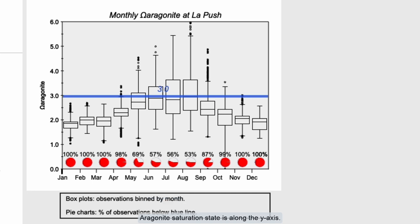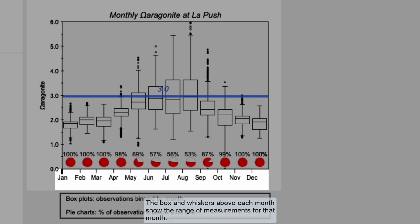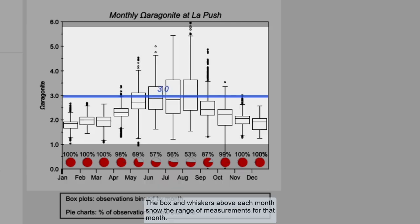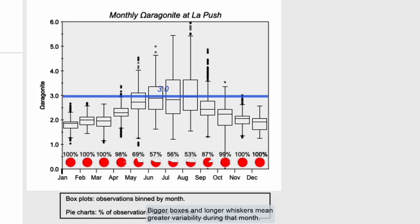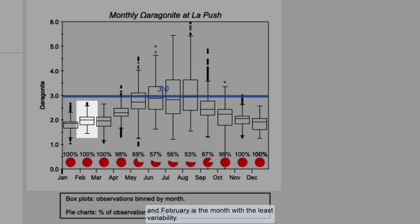Aragonite saturation state is along the y-axis and time is plotted along the x-axis. The box and whiskers above each month show the range of measurements for that month. Bigger boxes and longer whiskers mean greater variability, so you can see that July is the month with the greatest variability and February is the month with the least variability.